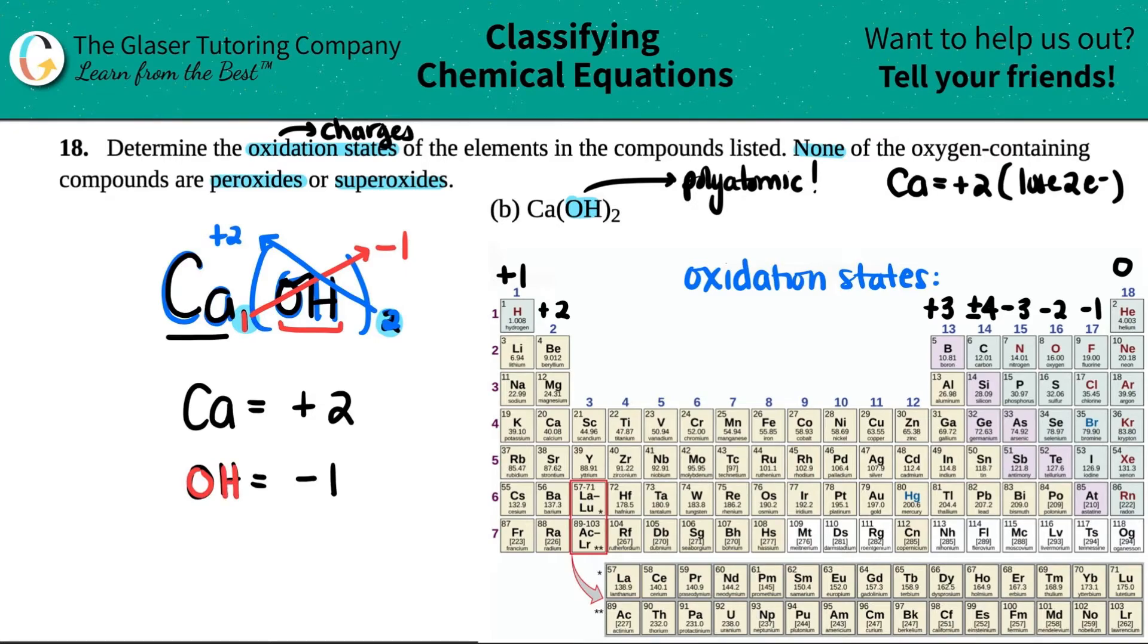Now for oxygen, it told us that none of the oxygen-containing compounds are peroxides or superoxides, so that means that oxygen will follow the trend. Oxygen will be a negative two charge - it will have an oxidation state of negative two. Oxygen's over here, it follows the trend, so by that snippet they told us that oxygen really is a negative two charge.